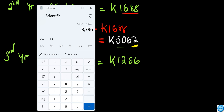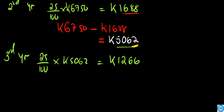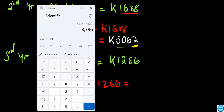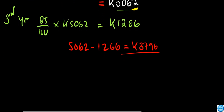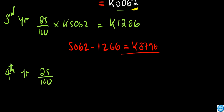So 5,062 minus 1,266 gives us 3,796. We have 3,796 as the new cost at the end of year three. Moving into year four, we continue the same process.